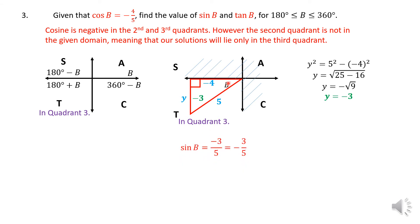Now we can find sine b and tan b. Sine b is opposite over hypotenuse: negative 3 over 5, so the whole thing is negative 3 over 5. Tan b is opposite over adjacent: negative 3 over negative 4, making that positive 3 over 4. Surely the tangent ratio is positive in the third quadrant — and also the first quadrant, but the first quadrant is not part of the domain.